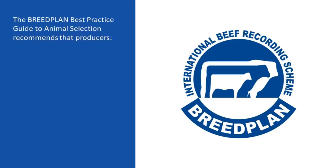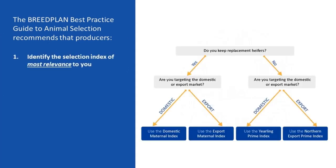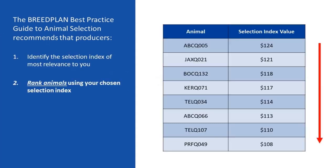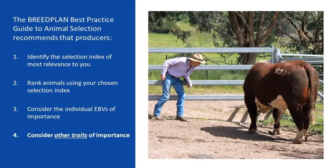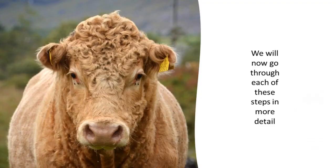The breed plan best practice guide to animal selection recommends that producers: 1. Identify the selection index of most relevance to you. 2. Rank animals using your chosen selection index. 3. Consider the individual EBVs of importance. 4. Consider other traits of importance. We will now go through each of these steps in more detail.